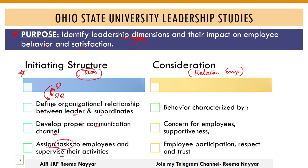The second dimension is Consideration — this is related to relationship-oriented or employee-centered leadership. Here a leader's behavior is characterized by his concern for employees and his supportiveness. It includes employee participation, how much respect the leader gives, and how much trust the leader places in his subordinates and followers.